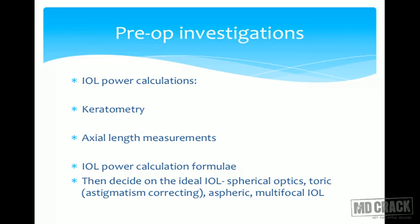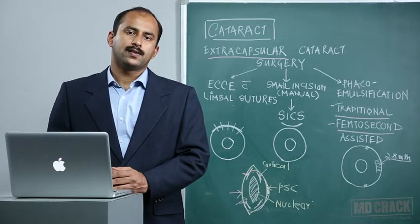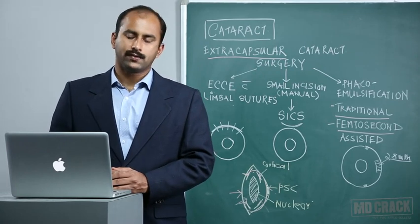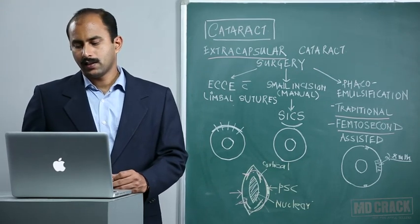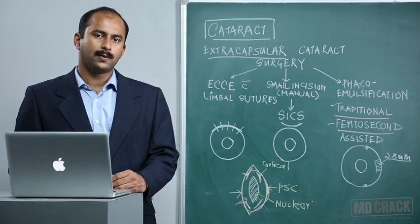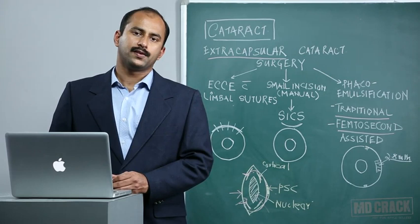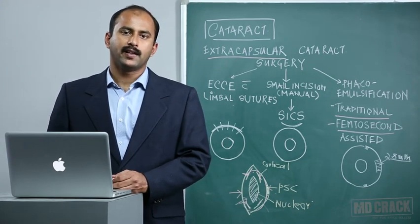The ideal IOL for a patient suits their individual needs based on biometric measurements. If keratometry reveals corneal astigmatism, toric IOLs are available to correct it. Other classes of IOLs include conventional spherical IOLs, aspheric IOLs, and multifocal IOLs. The multifocal IOLs available recently follow the diffractive principle and provide good distance, intermediate, and near vision, albeit at the expense of contrast sensitivity.